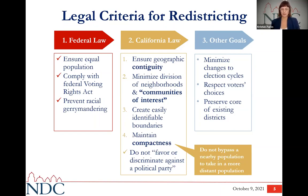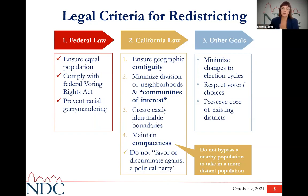There may be situations where bypassing nearby population is legally permissible — perhaps if we're complying with the Federal Voting Rights Act or trying to keep communities of interest together — but in general we want to avoid those strangely shaped districts. Finally, we don't want to favor or discriminate against any political party. That's important because city elections in California are nonpartisan, meaning they are not party-driven. We first have to make sure we've addressed federal and state law before considering additional goals.